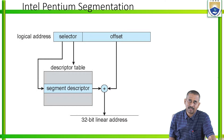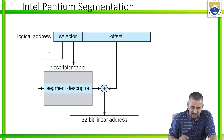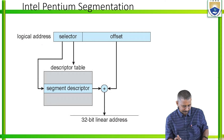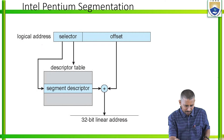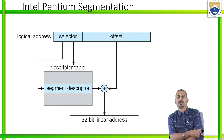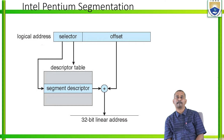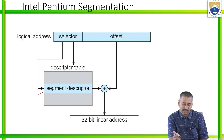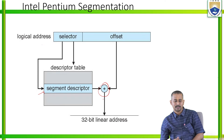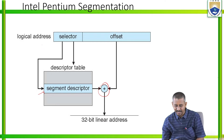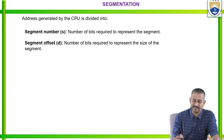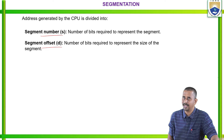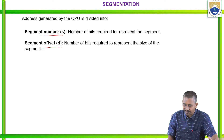This is the Intel Pentium segmentation architecture, showing how the logical address is translated into a physical address. In Intel Pentium segmentation, we have a descriptor table. The selector acts as input to the segment descriptor, and combined with the offset, it produces a 32-bit linear address. The segment number represents the number of bits required to identify the segment, and segment offset represents the number of bits required to represent the size of the segment.